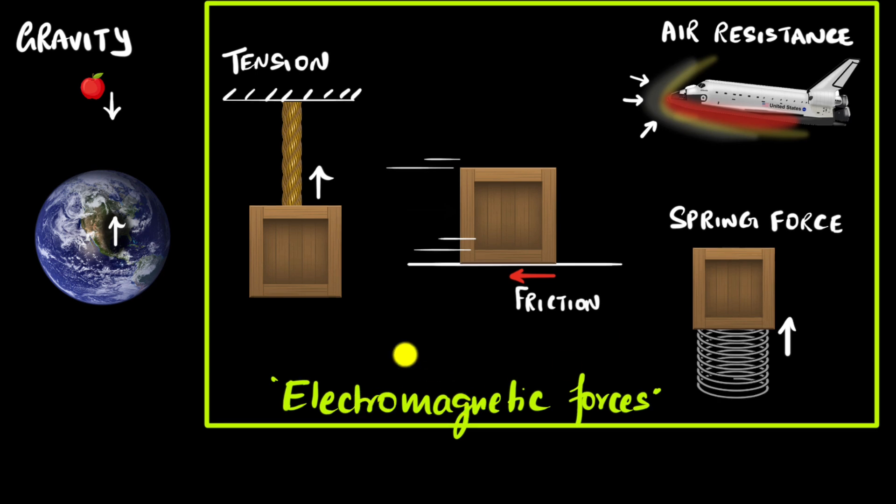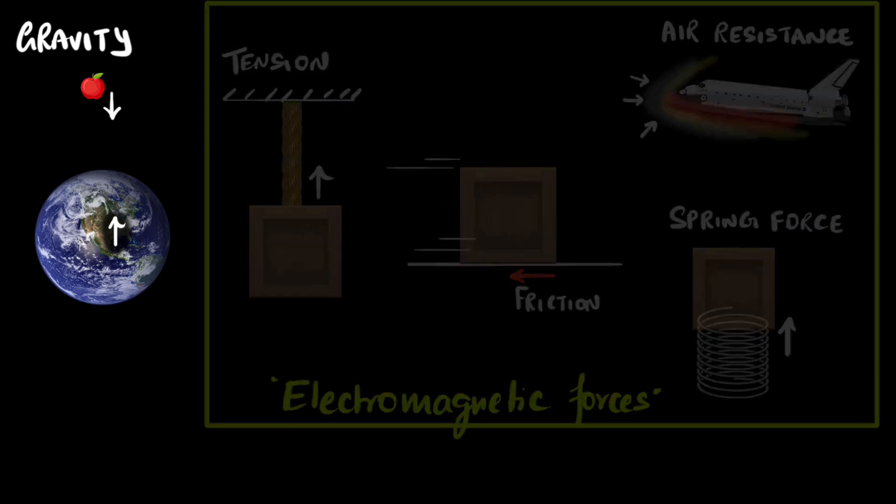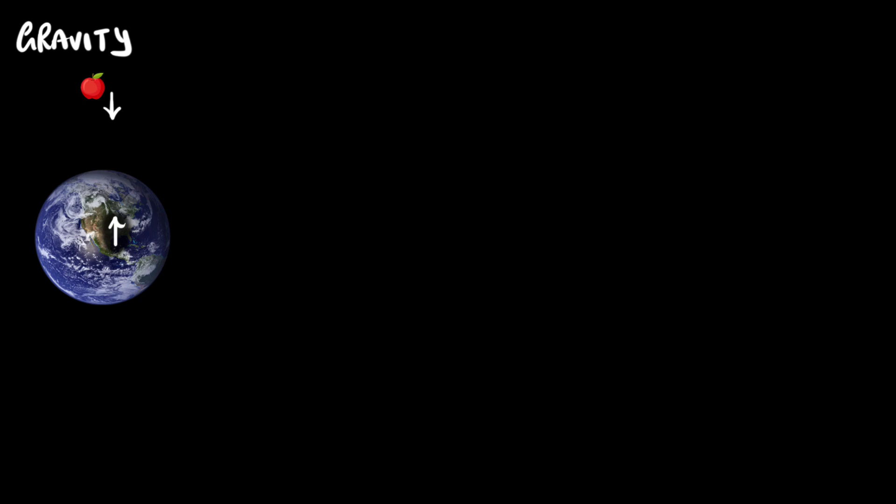Now, there are two parts to these forces, the electric part and the magnetic part. We will save the magnetic part for future videos. In this video, we'll just stick to the electric part of it. And even there, we'll talk about a particular kind of electric force, which we call the electrostatic forces.